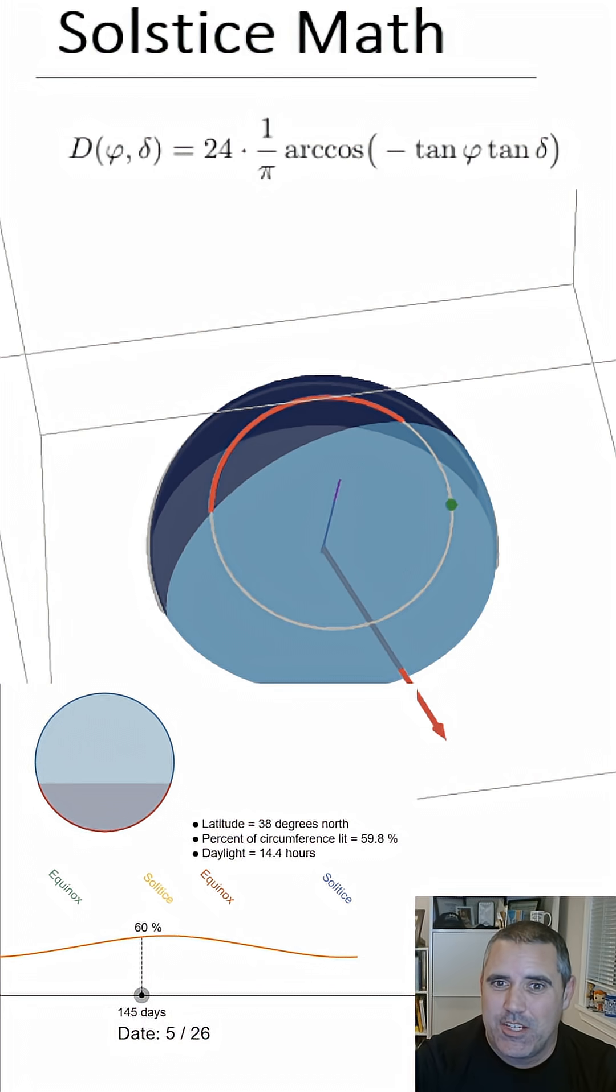It's really fun to play around with that because if you change the latitude, so like if you're towards the equator, you get about the same amount of light each day. If you get towards the poles, you eventually get to a place where it breaks and you get 24-hour light.